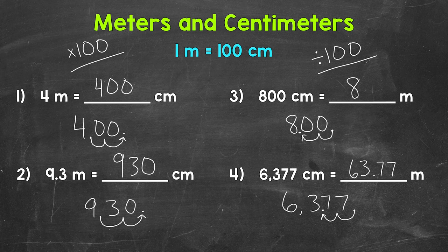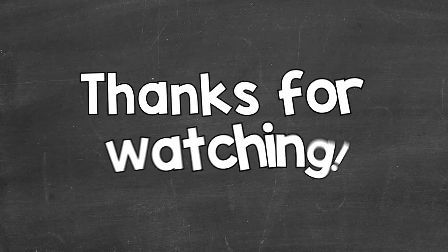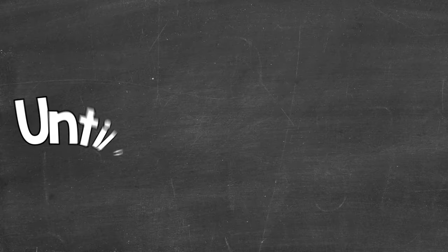There you have it — that's how you convert between meters and centimeters. When we go from meters to centimeters, multiply by 100 by moving the decimal twice to the right. When we go from centimeters to meters, divide by 100 by moving the decimal twice to the left. I hope that helped — thanks so much for watching. Until next time, peace.